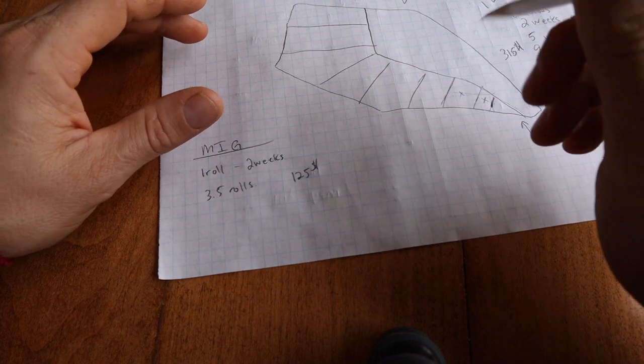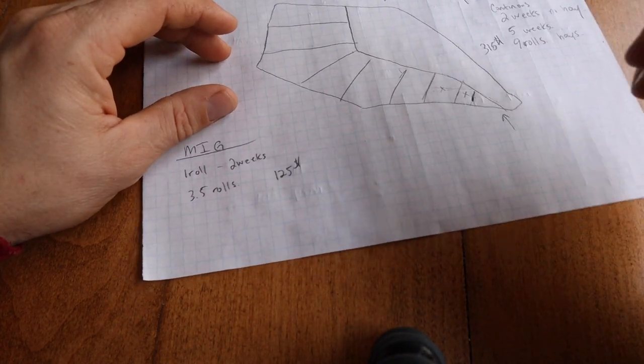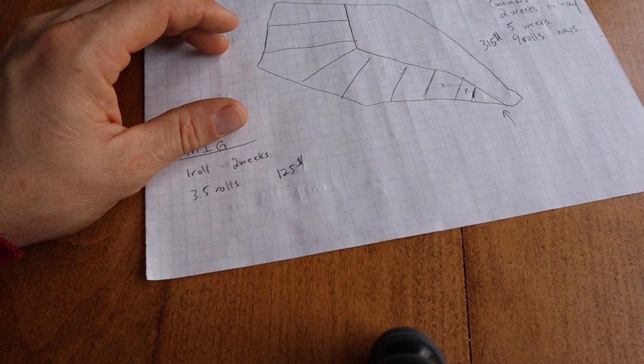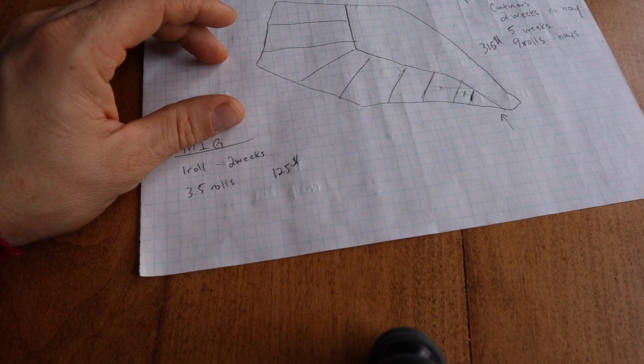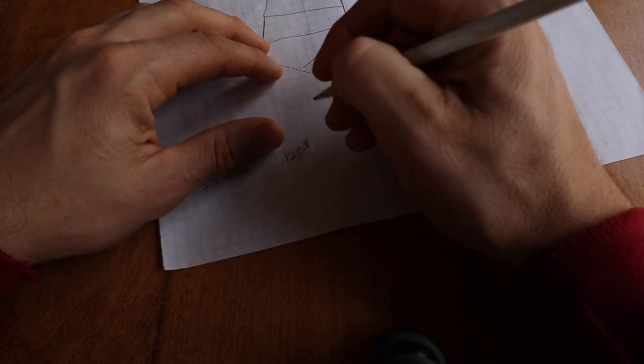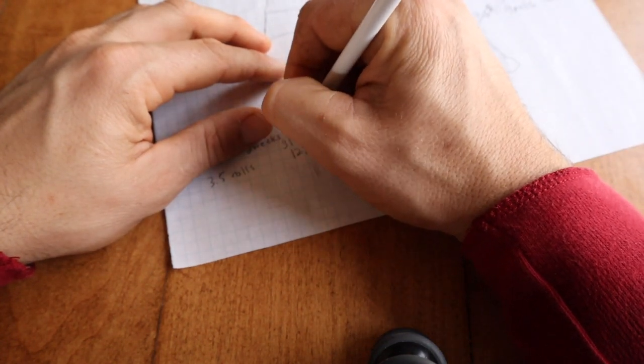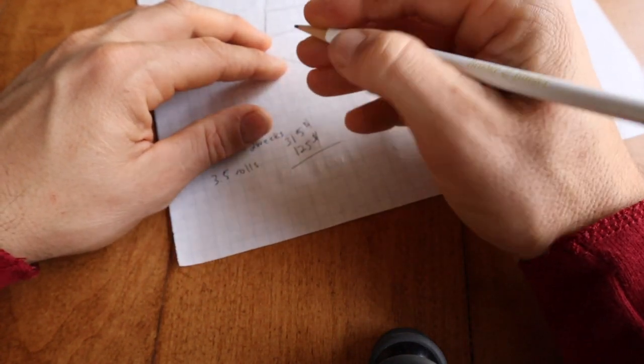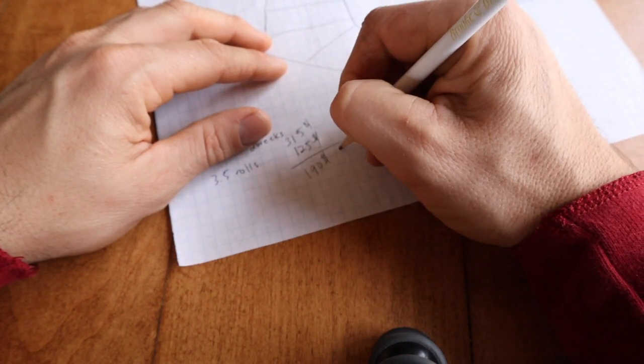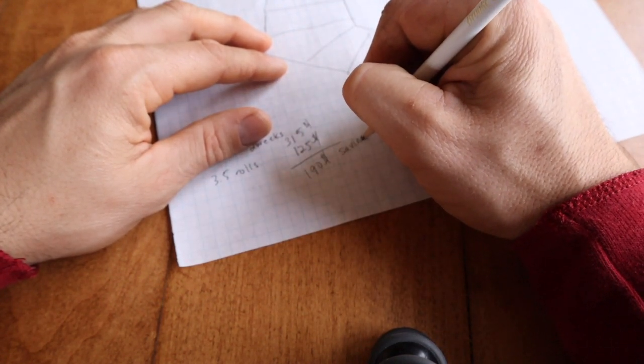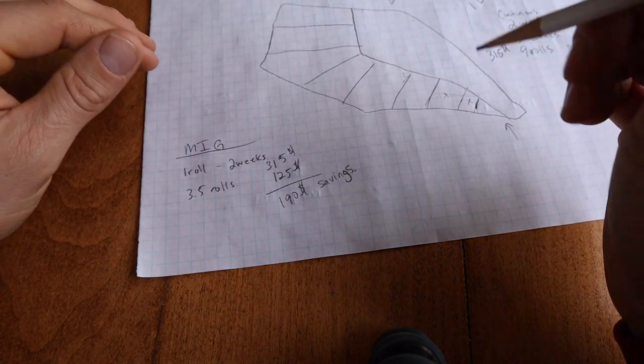We have $315 for continuous grazing minus $125, which is a balance of $190 savings for moving the cows every day.